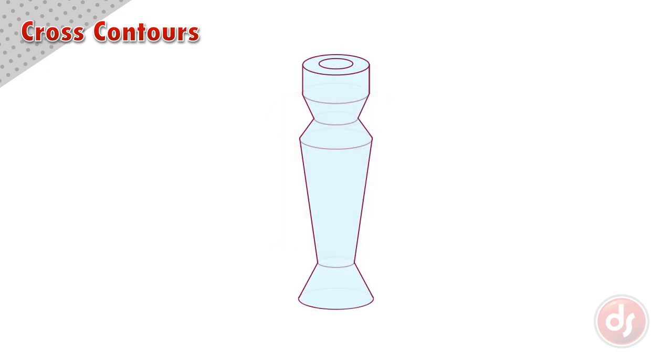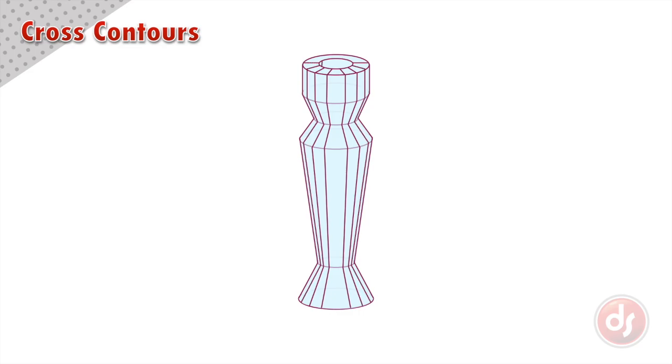Cross contours must also conform to the surface they are drawn on. Because this candle holder is cylindrical, cross contours going across the form will be ellipses. The surface is also smooth, so the cross contours going down will be straight lines that change angle to conform to the surface. Notice that the cross contours are spaced out in the center and get closer together as they move away from us on the side of the object to show the cylindrical form.